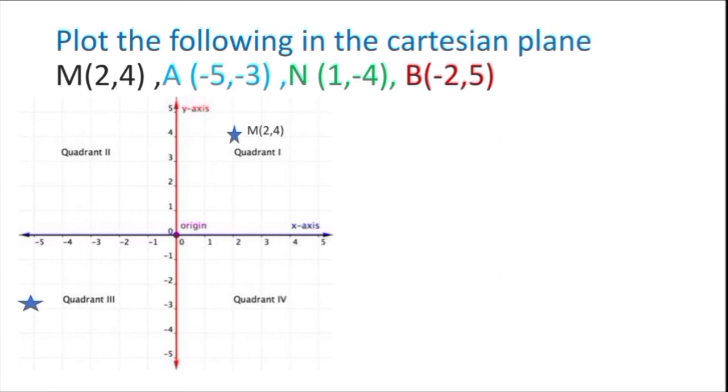Now A(-5,-3). Minus 5 is left side of the 0 and minus 5 and minus 3. Here it is A(-5,-3). Now N, X is 1 and Y is minus 4. So it is N(1,-4). You observe the children. Next point B(-2,5). X-axis, X is minus 2 and Y is 5. This is the point B(-2,5). So these are the points we have located on a graph on a Cartesian plane.